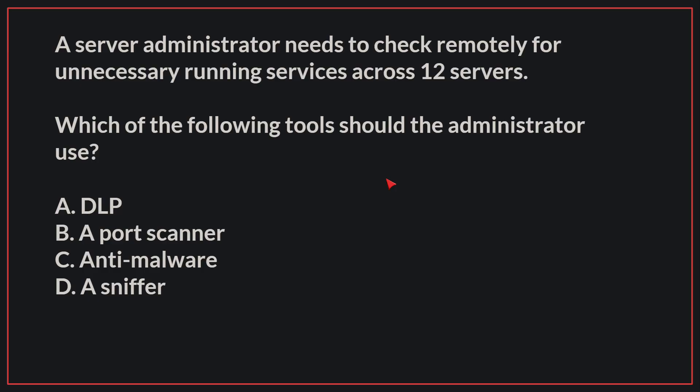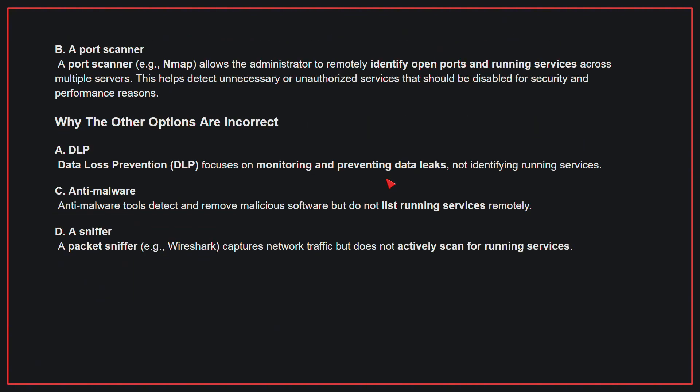A server administrator needs to check remotely for unnecessary running services across 12 servers. Which of the following tools should the administrator use? The correct answer is B, a port scanner. A port scanner allows the administrator to remotely identify open ports and running services across multiple servers, helping detect unnecessary or unauthorized services that should be disabled for security and performance reasons.